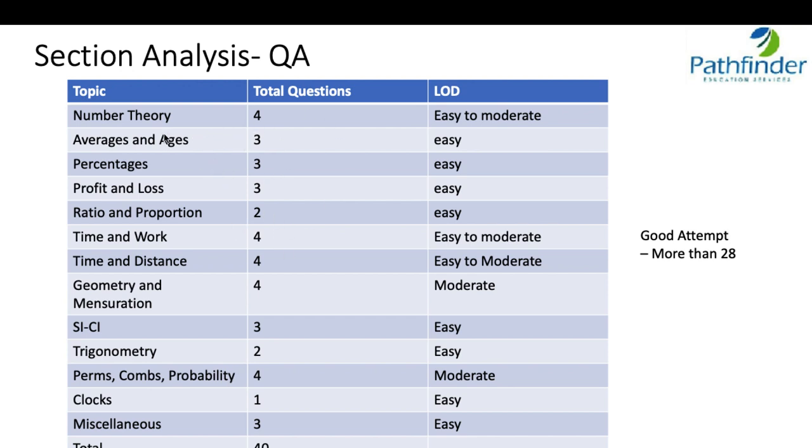If you look at the significance, the importance given to arithmetic, 22 out of the 40 questions have appeared from arithmetic which means more than 50 percent of the weightage is given to arithmetic. This is something which you need to remember when you are preparing for IPMAT, IIM Rohtak exam. The paper was mostly easy. I think a good attempt would be somewhere around 30, definitely not less than 28. 28 to 30 would be a good attempt and with a very high level of accuracy that too.